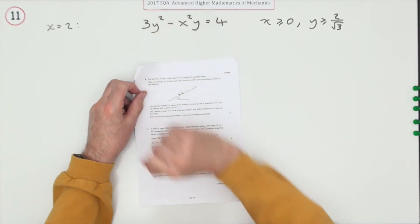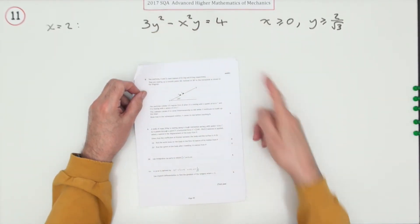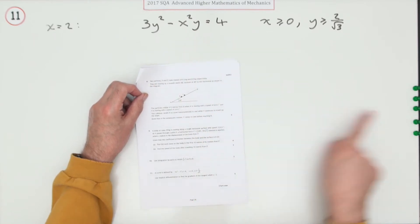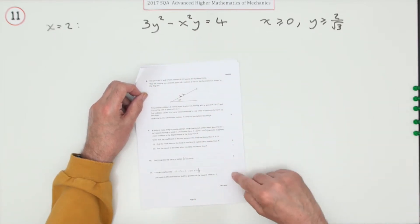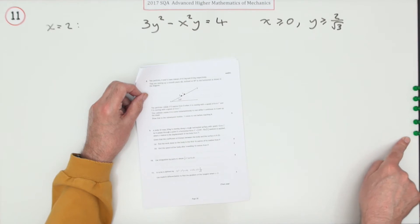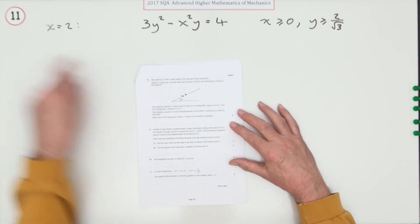Number 11 from the 2017 Mathematics and Mechanics exam. This question is worth five marks, and these five marks take the total to just over halfway—53 out of 100.